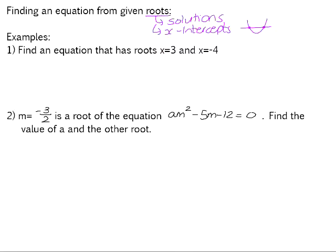So if we just look at some examples. Number one: find an equation that has roots x equals 3 and x equals negative 4. Those were the final solutions to the equation. If we think about what the previous step of that equation would have looked like — to get x equals 3 and x equals negative 4 — we would have had two binomials multiplied together whose product is 0.